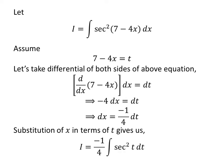Substitution of 7 minus 4 times x by t and differential of x by minus 1 upon 4 times differential of t in integral I gives us I is equal to minus 1 upon 4 times integral of square of secant of t with respect to t.